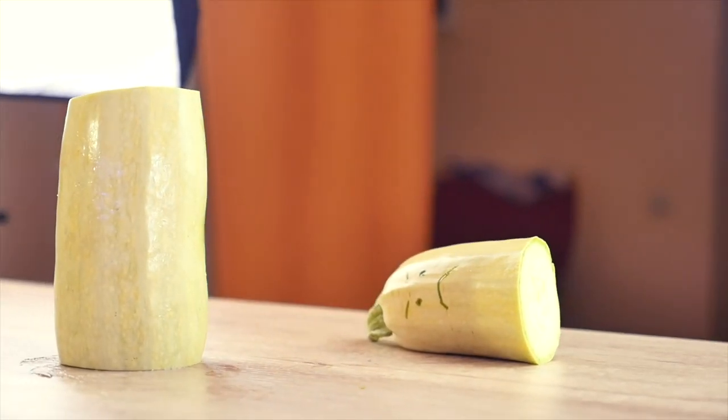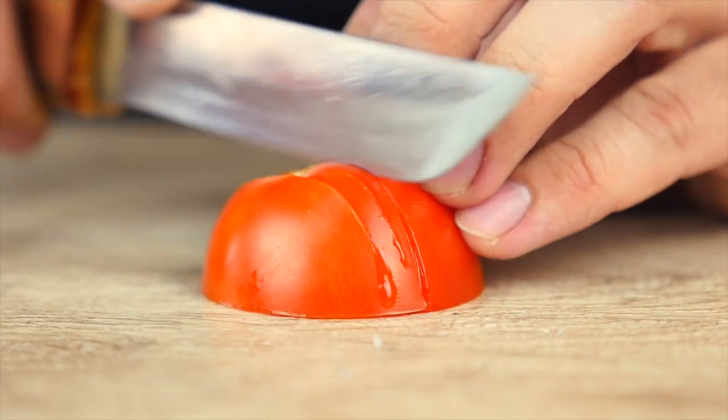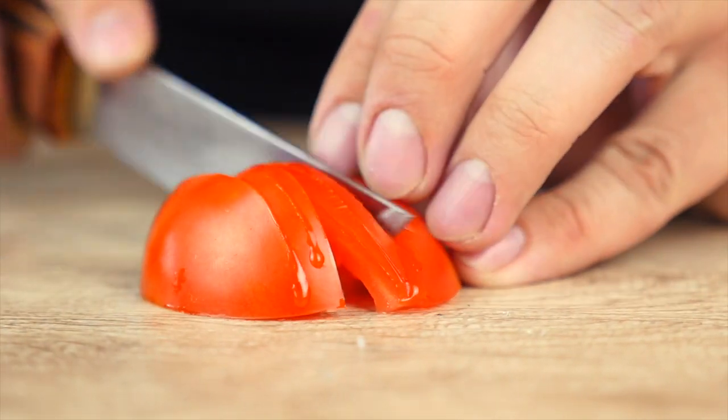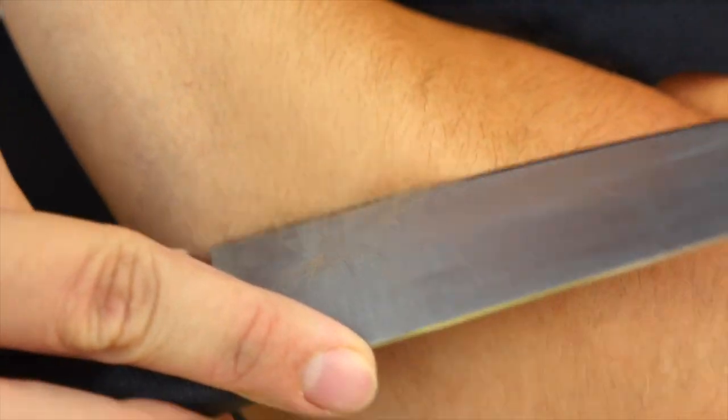With one moment, the enemy is defeated. Tomatoes for scrambled eggs can also be cut. And now the knife even shaves. Look at this.